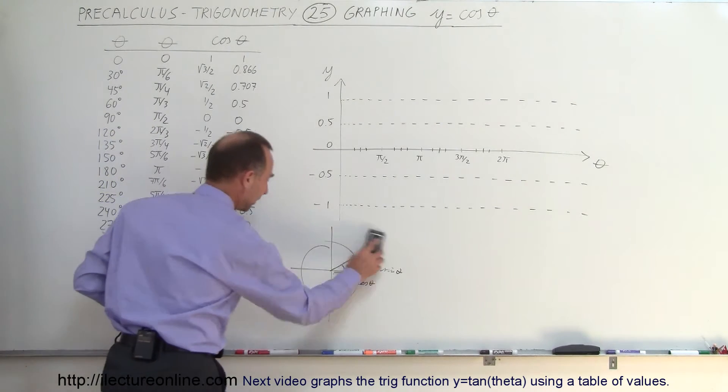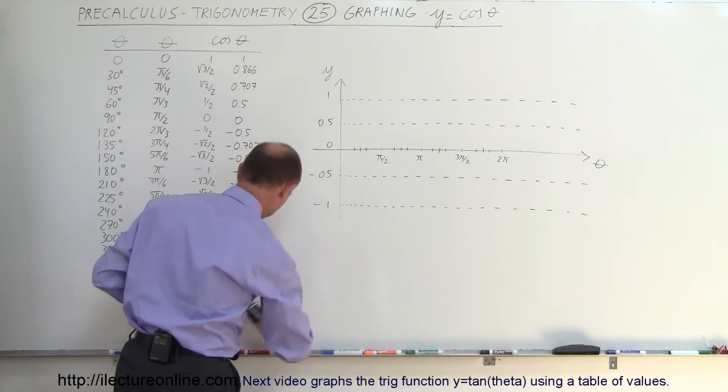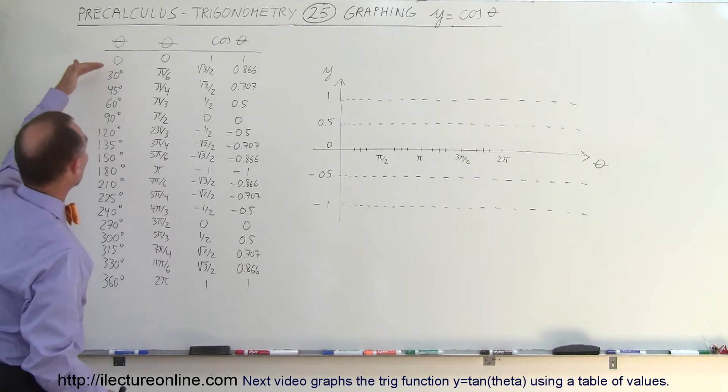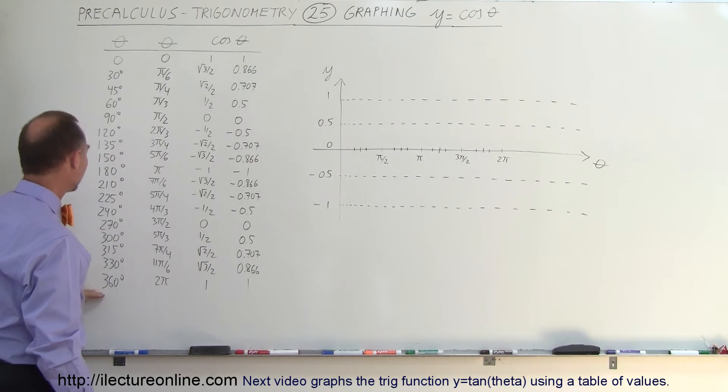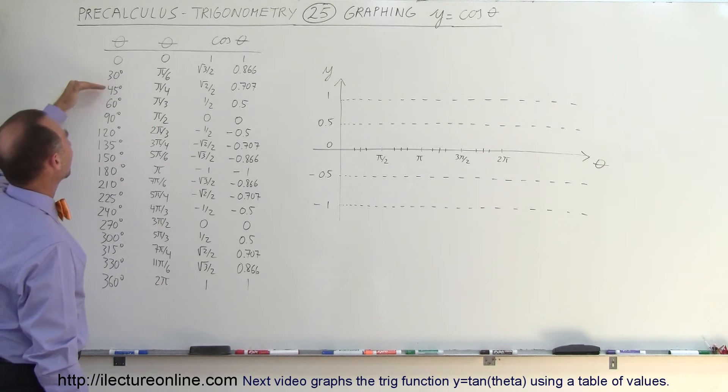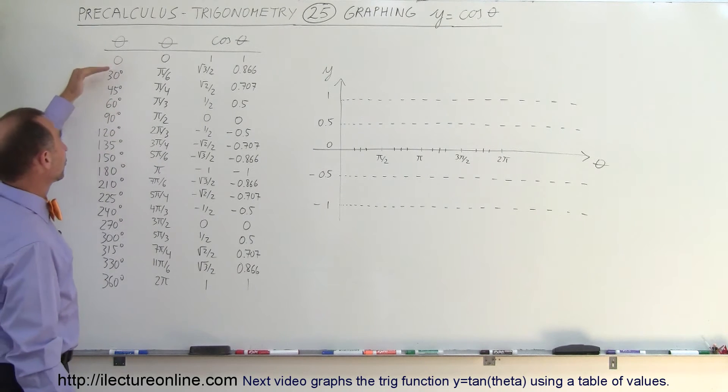Alright, now that we have that out of the way, what we've done here is written down all the angles between 0 and 360 degrees at 30 and 15 degree intervals. So we went from 0 to 30,